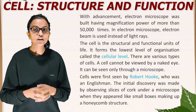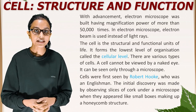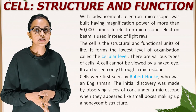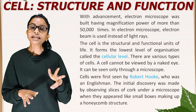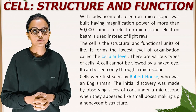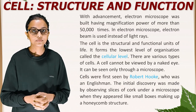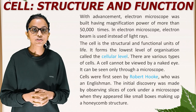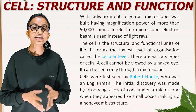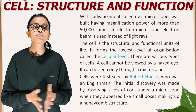The cell is the structural and functional unit of life. It forms the lowest level of organization called the cellular level. There are various types of cells. A cell cannot be viewed by the naked eye; it can be seen only through a microscope. Cells were first seen by Robert Hooke, who was an Englishman. The initial discovery was made by observing slices of cork under a microscope, when they appeared like small boxes making up a honeycomb structure.